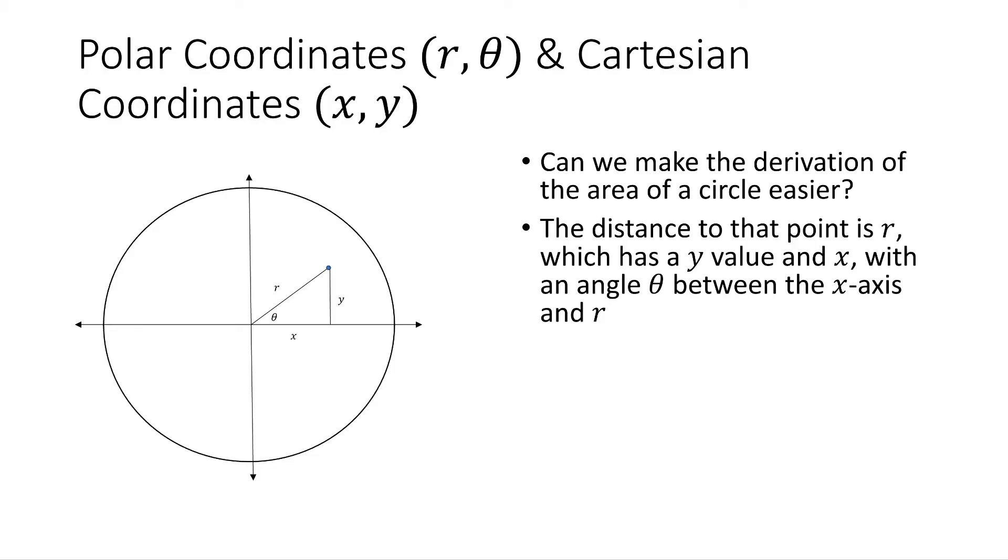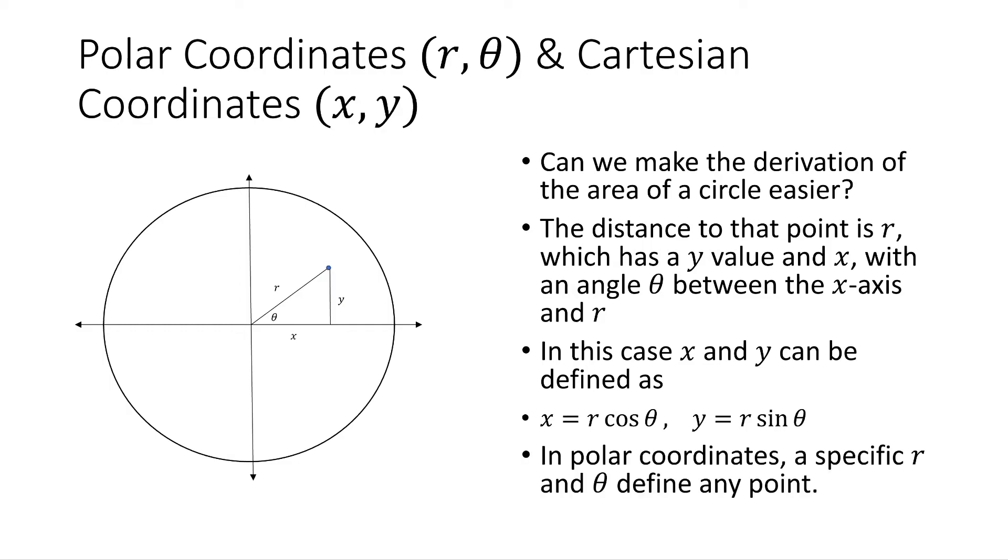So if we can imagine that to some point we choose in the circle, it has a distance r away from the origin. And it has a specific y and x value. And there's some theta that we can define from that r to the x-axis. So then we can define both x and y as x equals r cosine theta, and y equals r sine theta, based on that triangle we have over there.